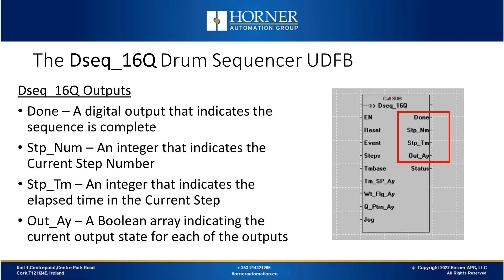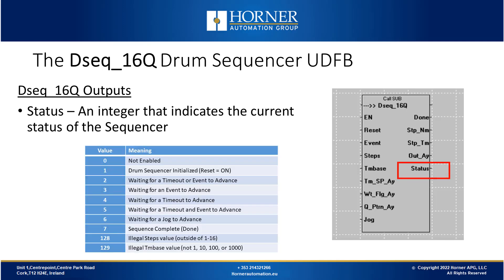Now we'll look at the outputs of our drum sequencer UDFB. First there's a done bit which turns on when the sequence is complete. There's a step num integer that tells you what step number you're on. Then step time — the current elapsed time for the current step; if your time base is one second and you read a value of 5, that means five seconds have elapsed in the current step. Then there's the output array — a boolean array representing the current state of those 16 outputs. Finally, a status integer indicates the current status of the sequencer, enunciating if you've configured an illegal number of steps, an illegal time base, or if the sequence is not enabled.